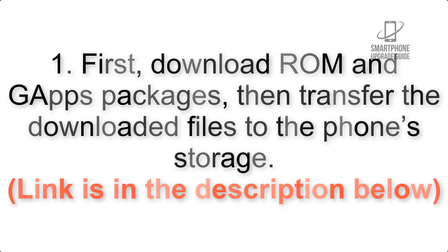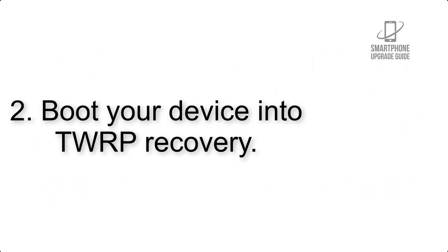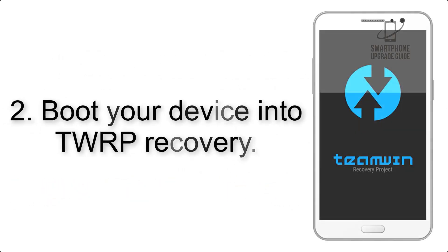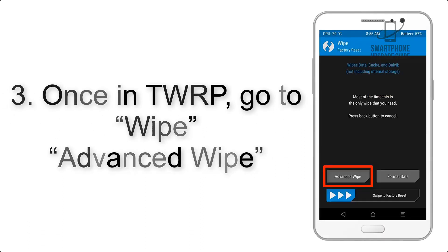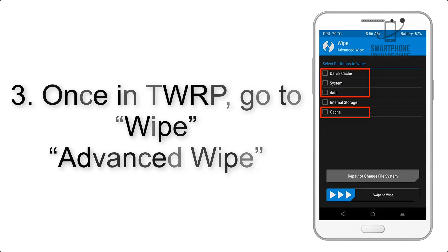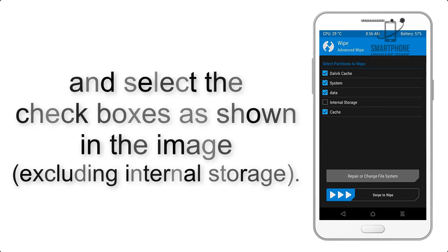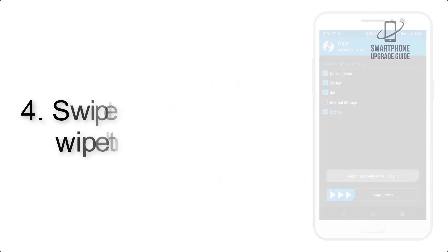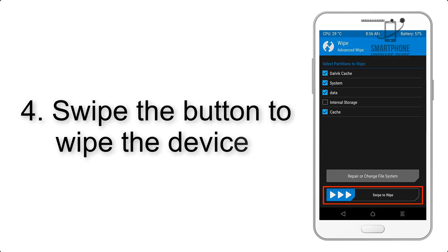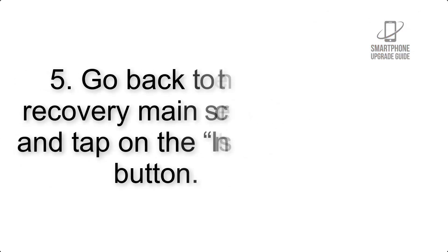Step 2: Boot your device into TWRP recovery. Once in TWRP, click on Advanced Wipe and select the checkboxes as shown in the image, excluding internal storage. Step 4: Swipe the button to wipe the device.